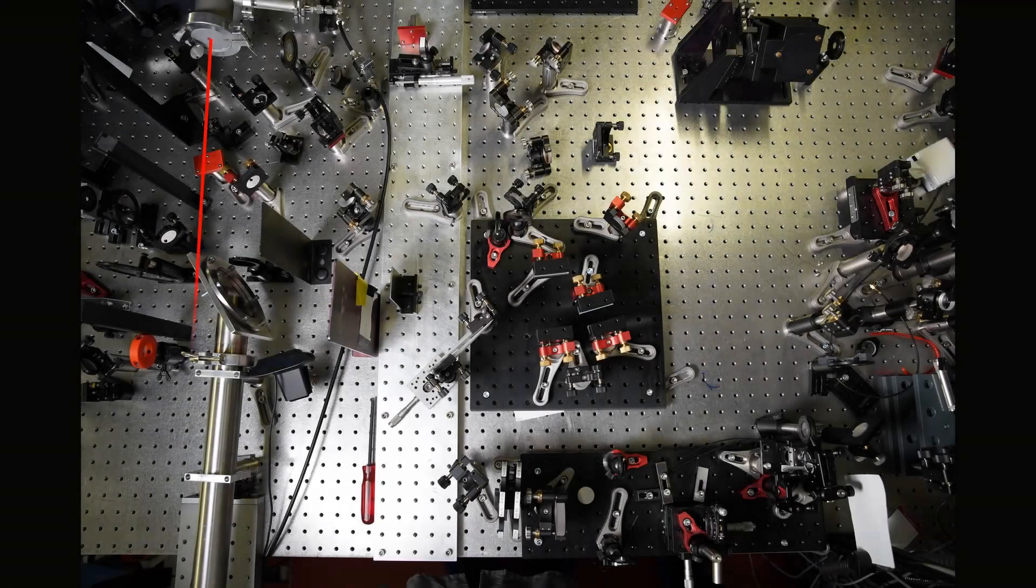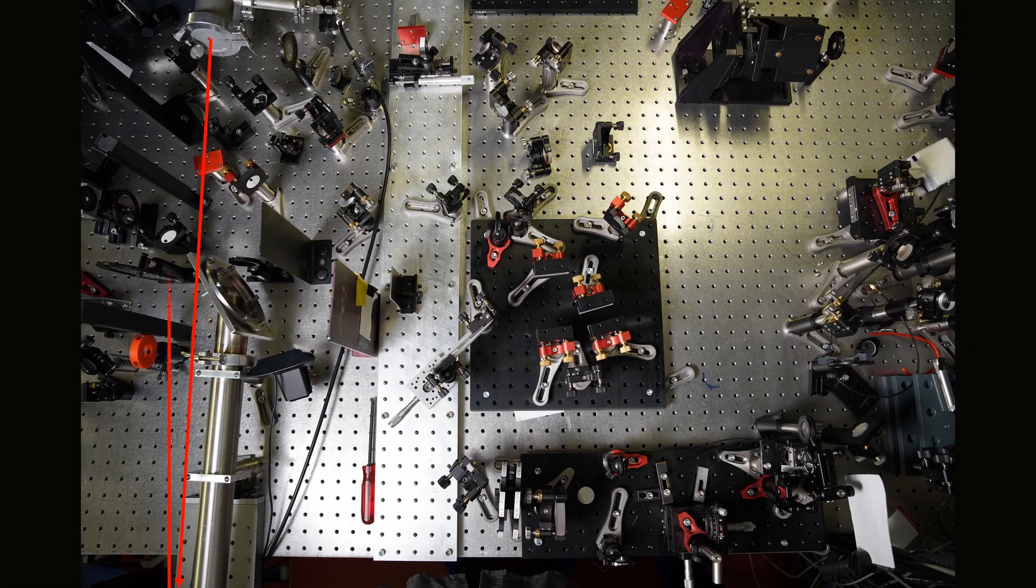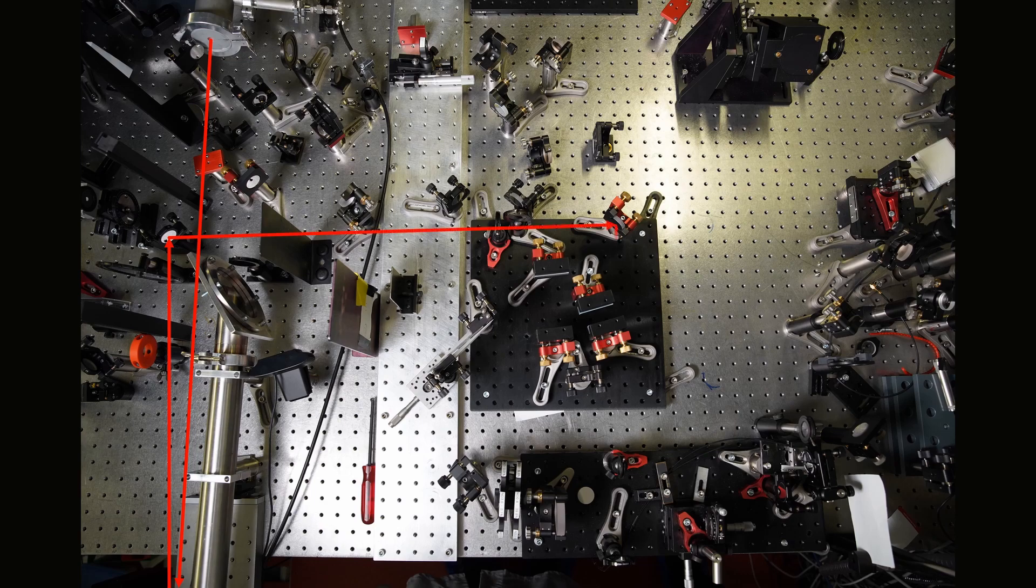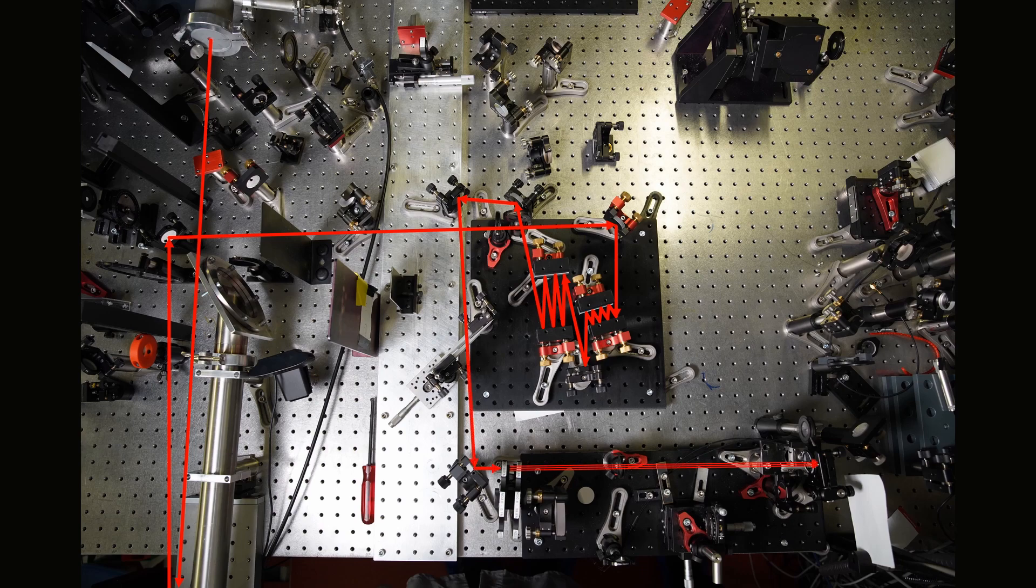Here, we have another overview from above, which should help you to better understand the beam path in the setup. We get our pulse from the hollow core fiber, which is located at the top left of the image. In the middle, you can see the compressor with the wedges, while on the lower right side, the nonlinear optical process takes place.